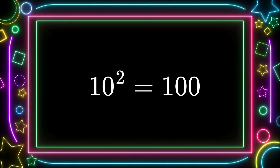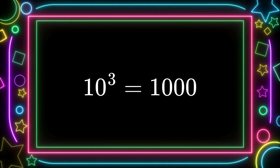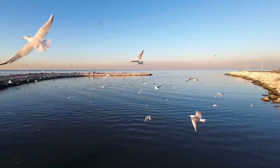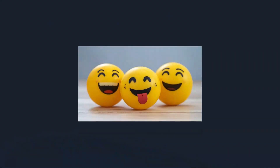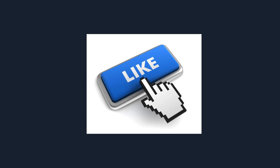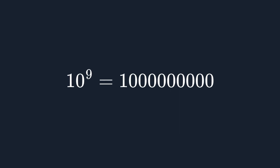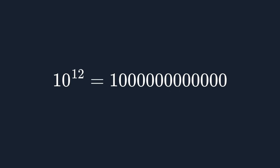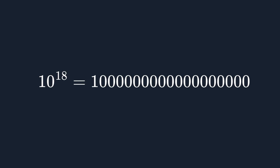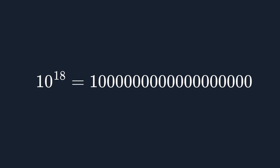Let's use 10. 10 to the second power takes us directly to 100. 10 to the third power is 1,000. But let's continue. 10 to the sixth power is already 1 million. Now we've reached something considerably large, right? 10 to the ninth power equals 1 billion. 10 to the twelfth power equals 1 trillion. 10 to the fifteenth power equals 1 quadrillion. 10 to the eighteenth power equals 1 quintillion.